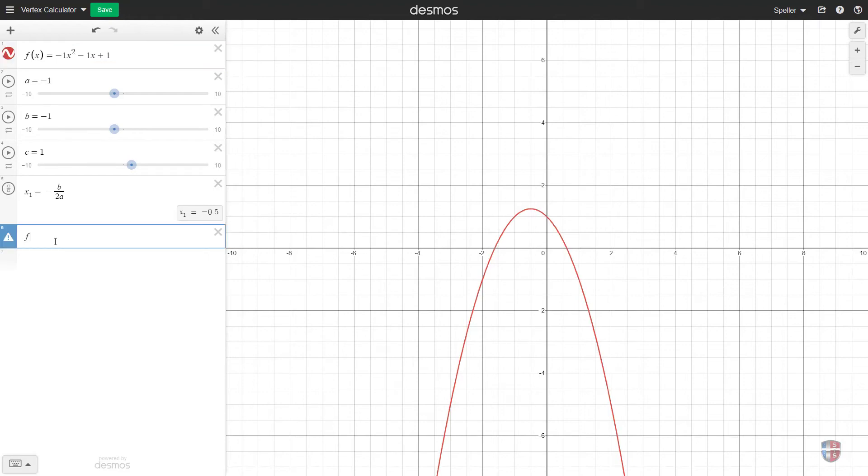And the input value I want to use is the negative 0.5, so I'm going to use the variable that I created, which is x sub 1. So inside the parentheses here I'm going to type x sub 1, and then here we see that the y value turns out to be 1.25.